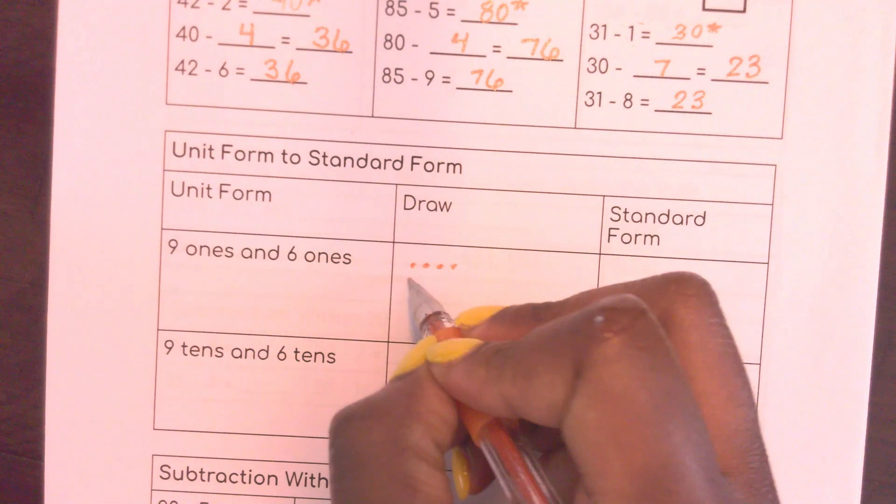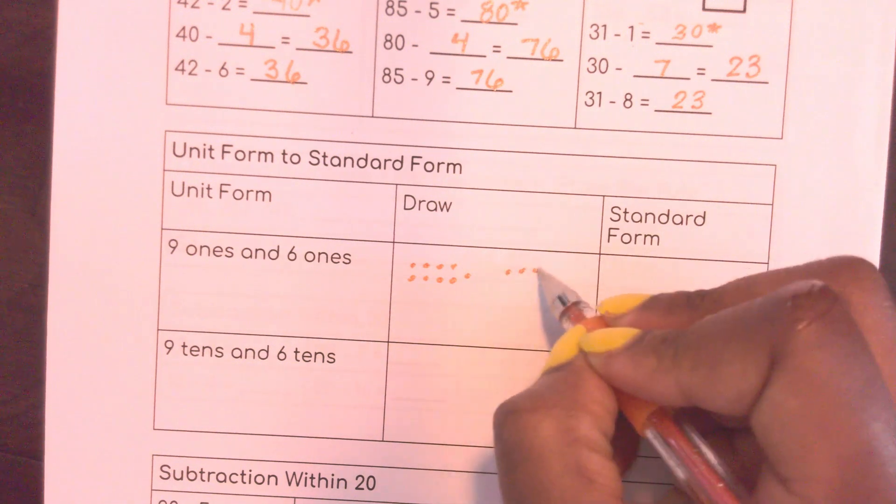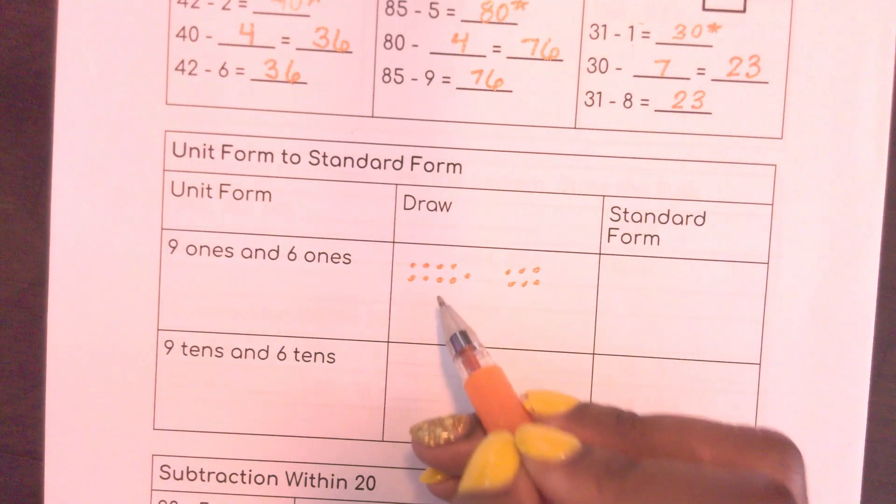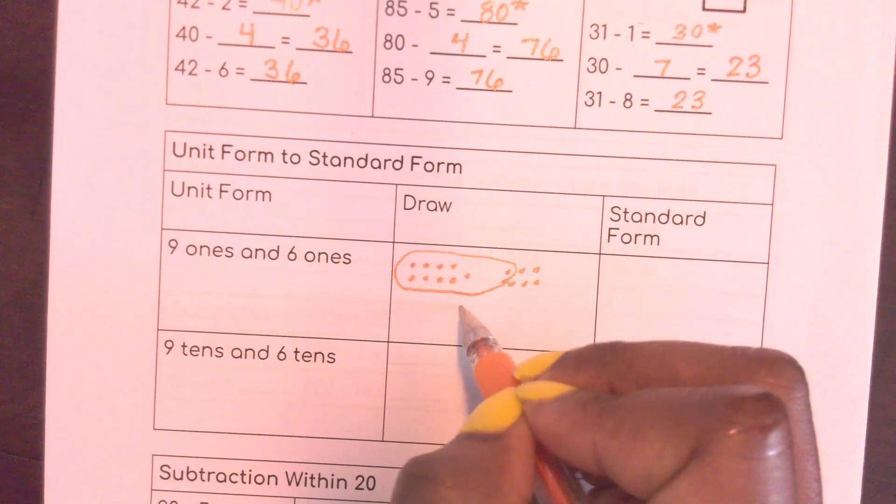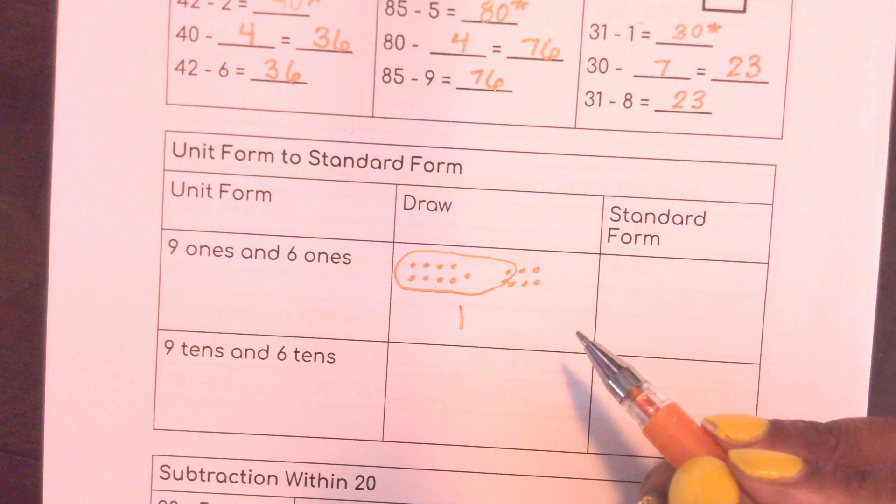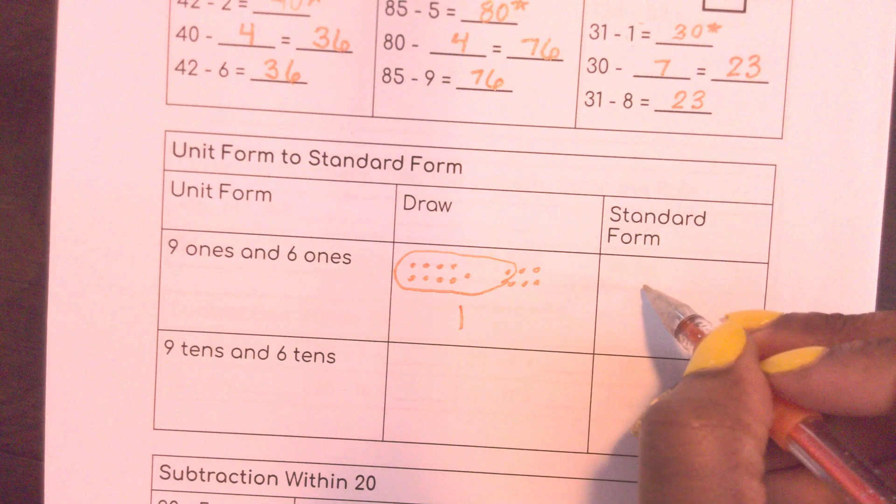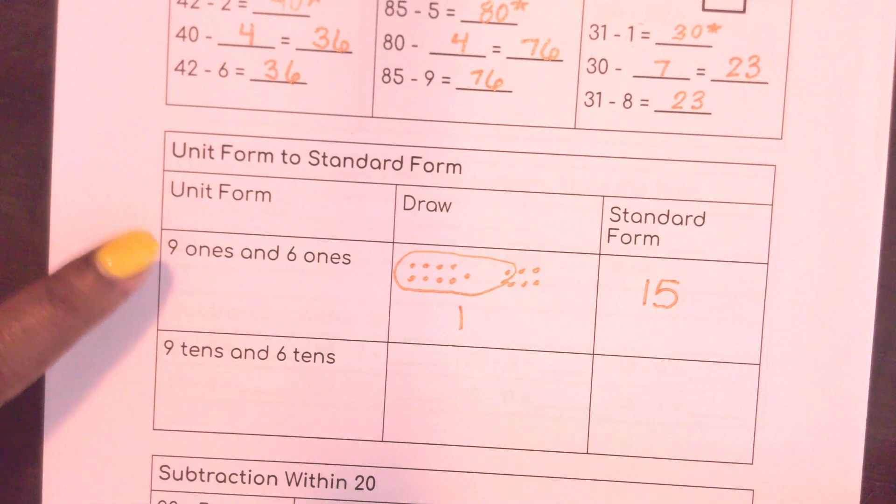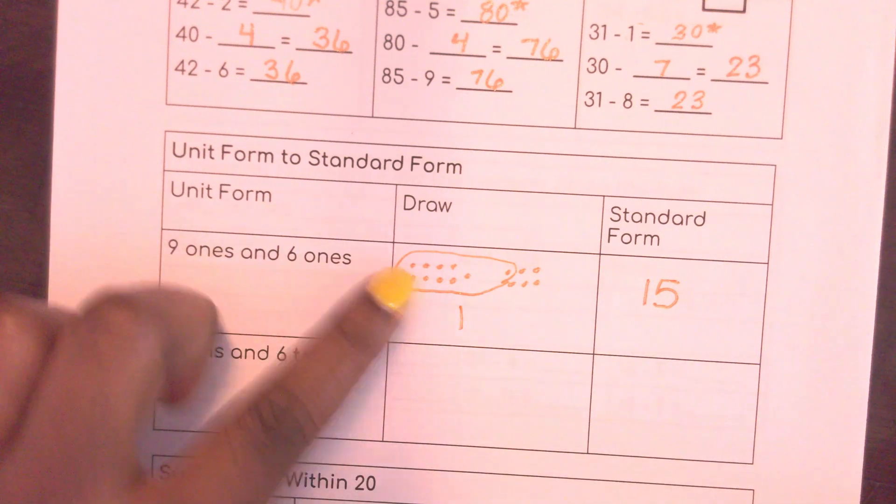I have 9 ones. 1, 2, 3, 4, 5, 6, 7, 8, 9, and 6 ones. 1, 2, 3, 4, 5, 6. Let's see if I can make a 10. Well if I have 9 ones here, I know I just have to take 1 from over here to make a 10. How many ones do I have left? 5. So I have 1, 10, and 5 ones. So that would give me 15. So now I know that 9 ones and 6 ones equals 15. 15 ones which gives me 15.